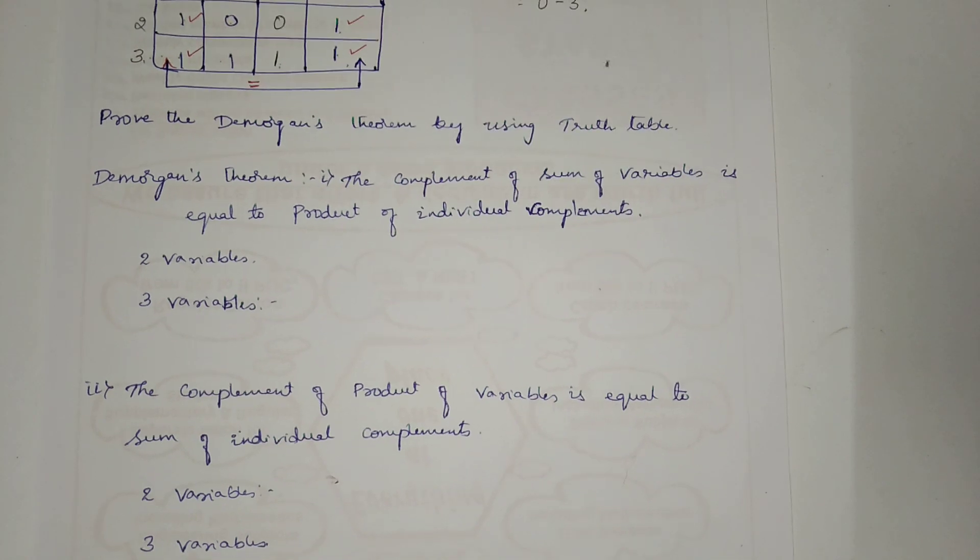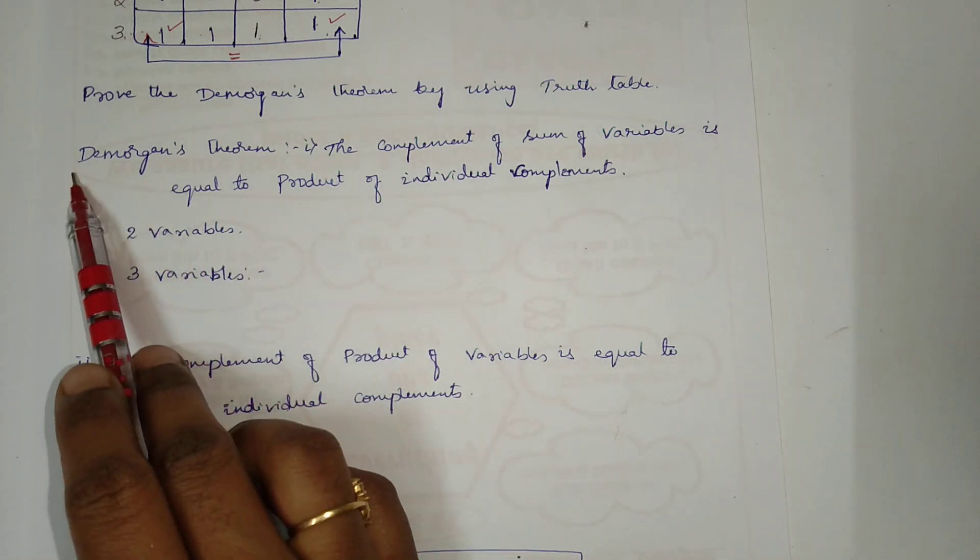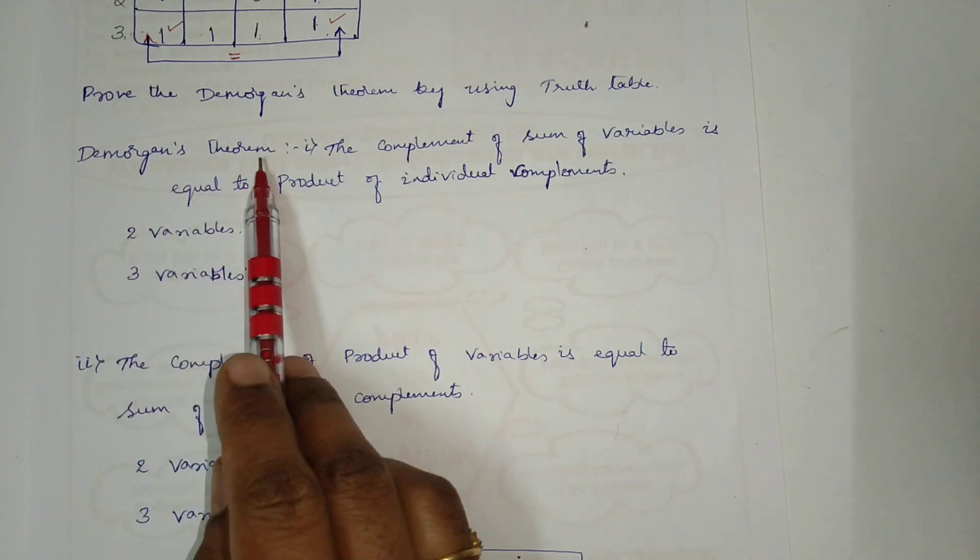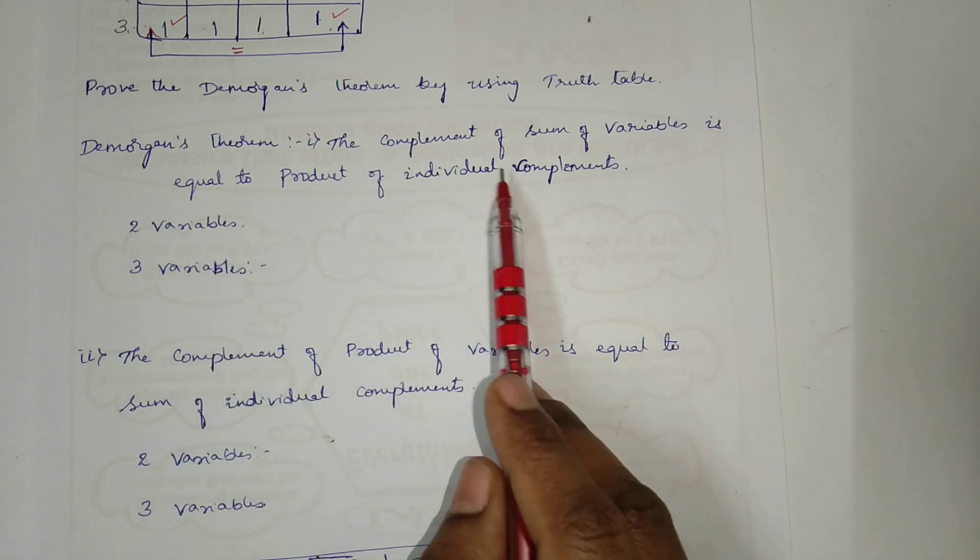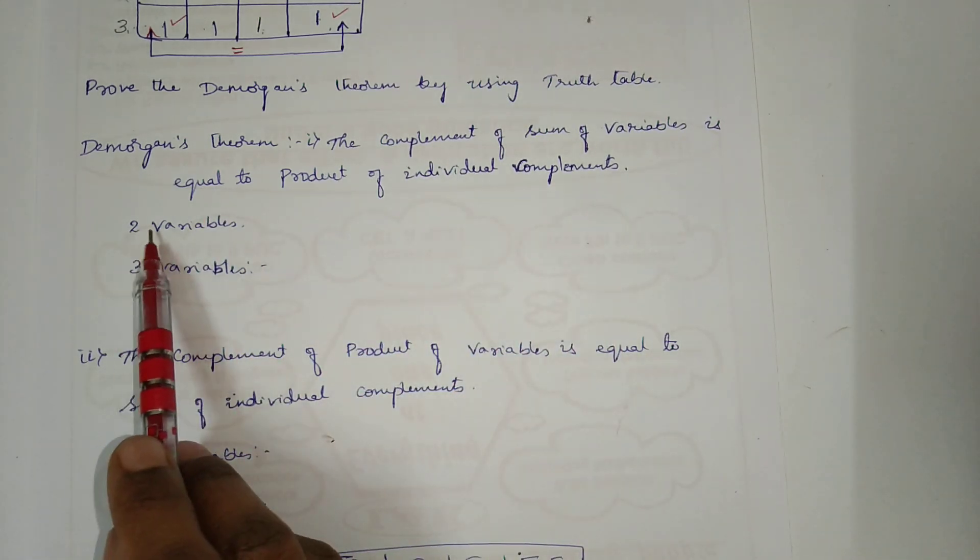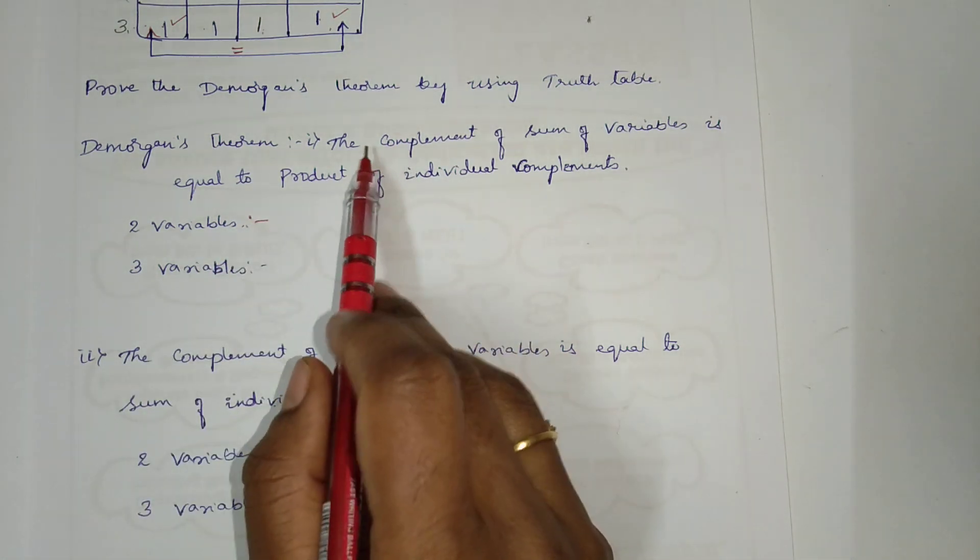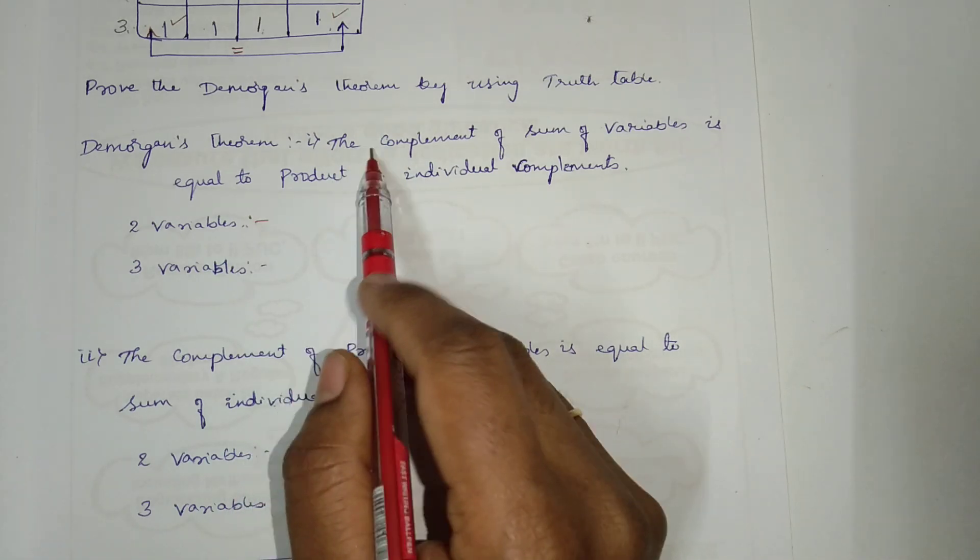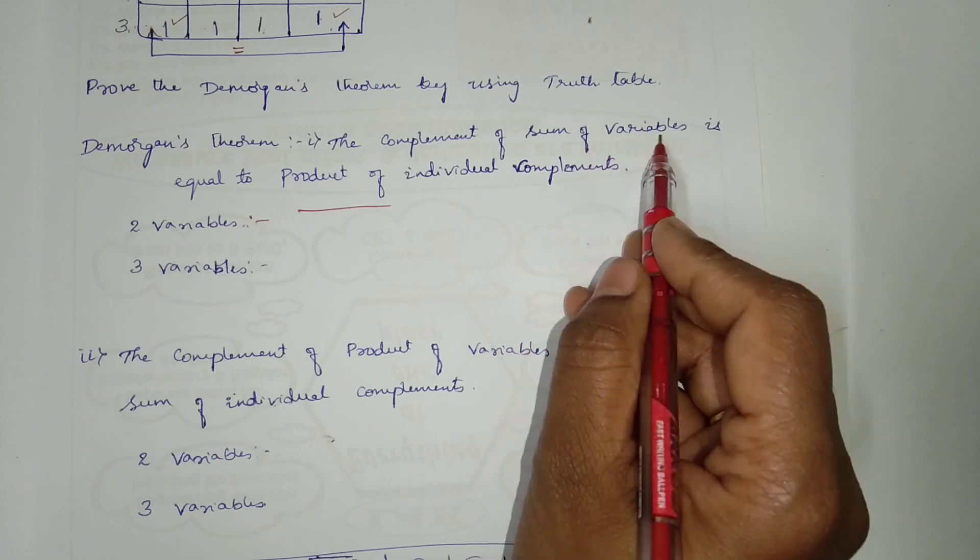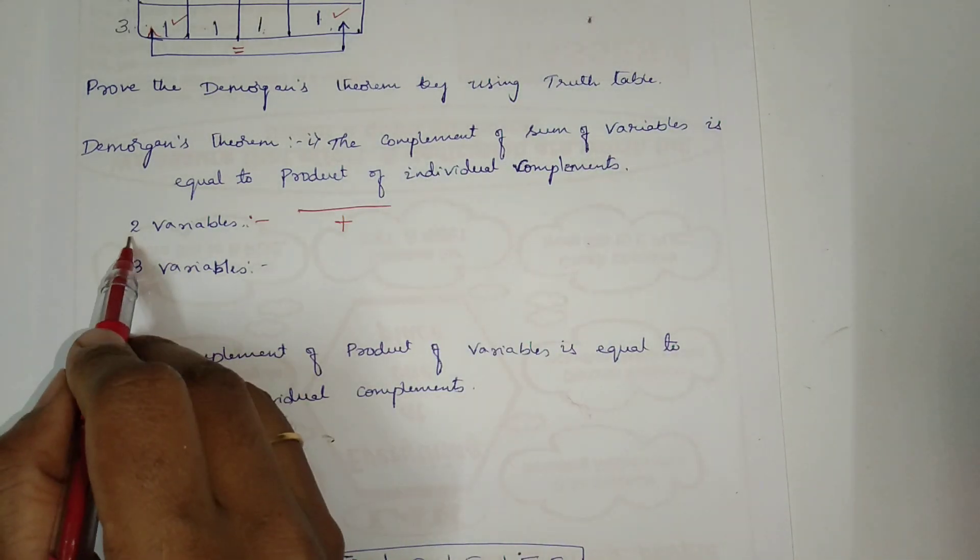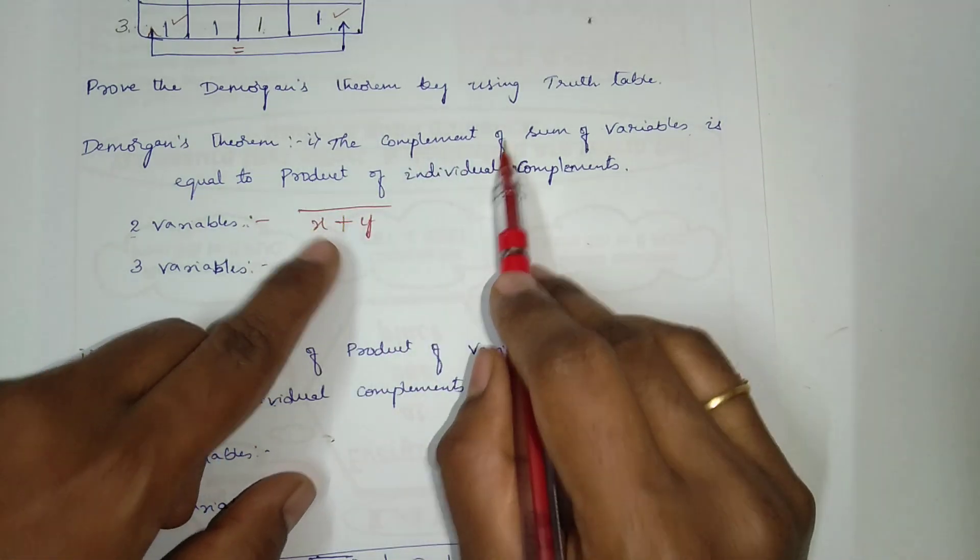Next, prove the De Morgan's theorem by using the truth table. Before going to the proof, let us first discuss what does the De Morgan's theorem say. There are two forms of De Morgan's theorem. The first one says, the complement of sum of a variable is equal to the product of the individual complement. We can write it for n number of variables. I will show you for two variables and for three variables. Let me take it for two variables first.